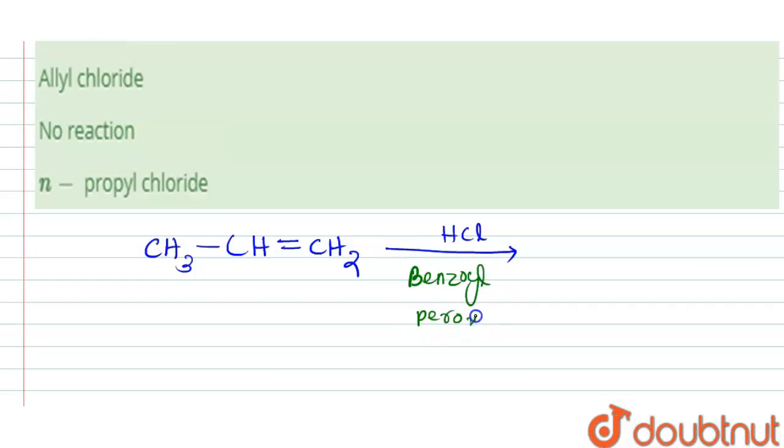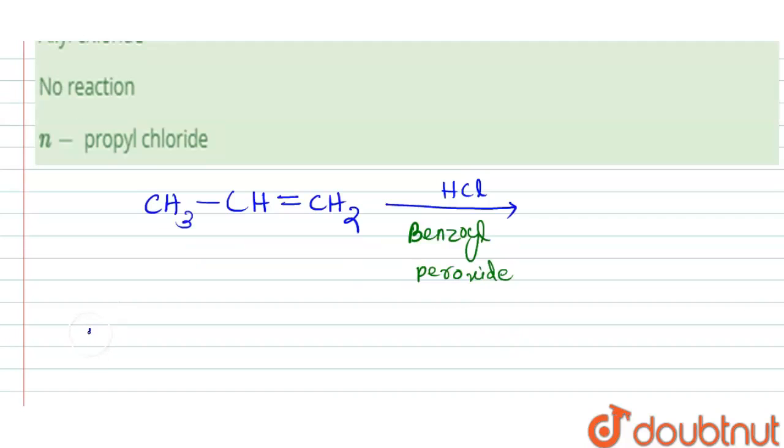We know when the reaction of an alkene occurs with HBr in presence of peroxide, that follows anti-Markovnikov rule.